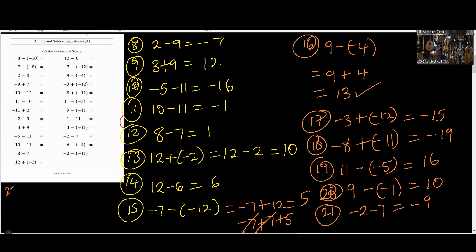Number 22: 6 minus minus 4. The two negative signs become positive, so the answer is going to be positive. You're going to do 6 plus 4, which equals 10.